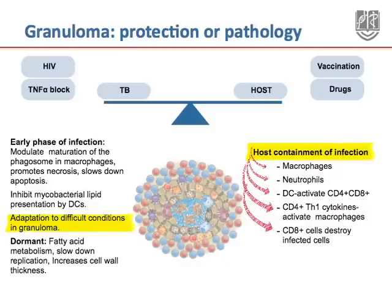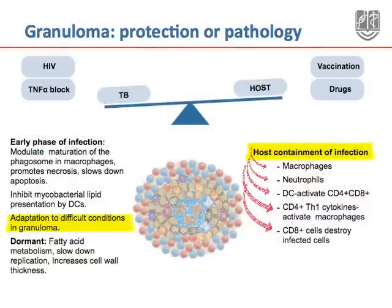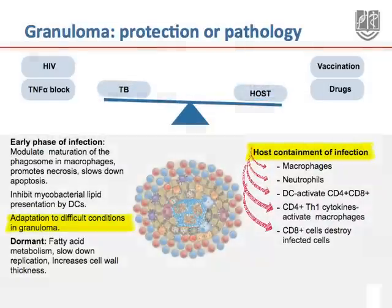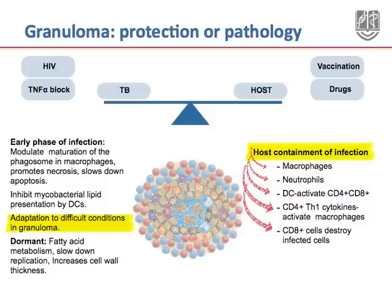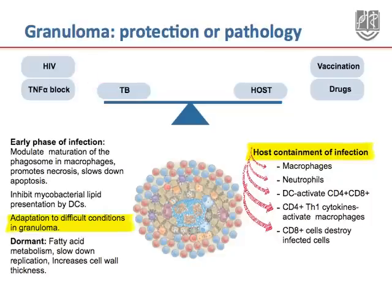Anything that affects the balance between MTB and the host immune response will result in either disease progression or improved containment. For example, HIV and any treatments that result in immune suppression tilt the balance in favour of the bacterium. On the other hand, vaccination and chemotherapy tilt it towards the host.